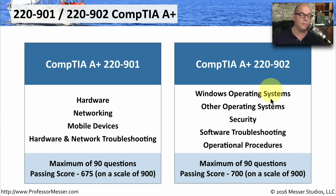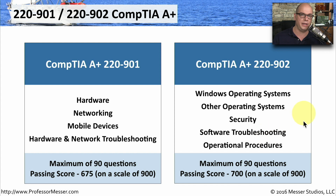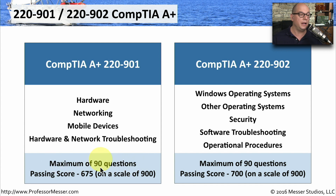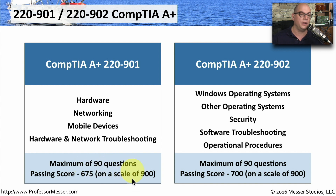The 902 is going to include the Windows operating systems — there are some new operating systems included, which we'll talk about in a moment. The 902 also includes security, software troubleshooting, and operational procedures. The number of questions and passing scales are exactly the same as the 800 series: you may get up to 90 questions for either exam. You need a 675 on the 901 and a 700 on the 902, both on a scale from 100 to 900.